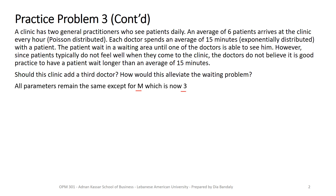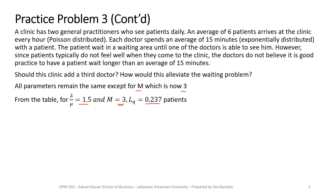Changing M changes where we look in the table. For the same lambda/mu of 1.5 but now m = 3, we read LQ = 0.237 patients — much, much less than before, which is logical.